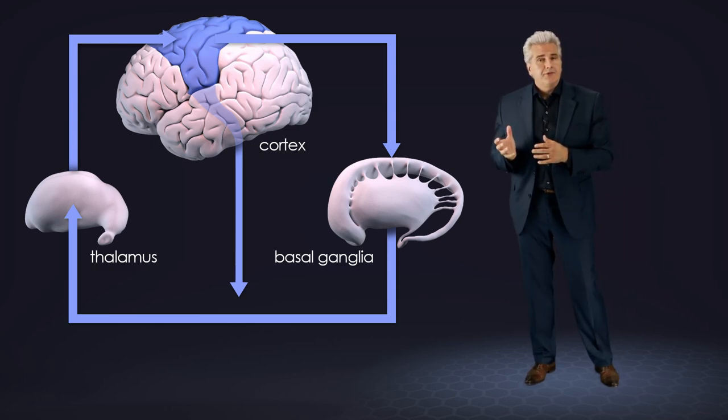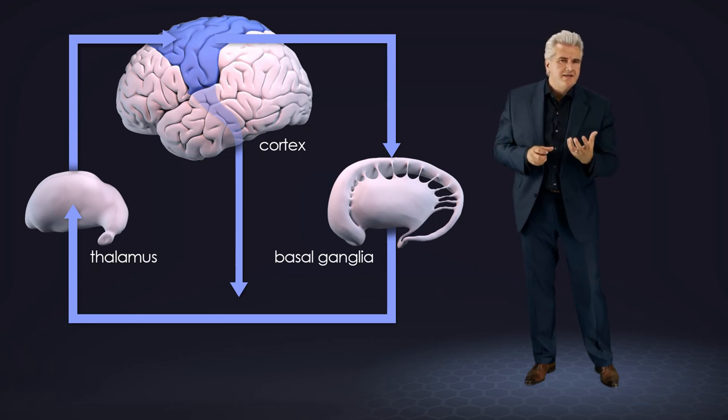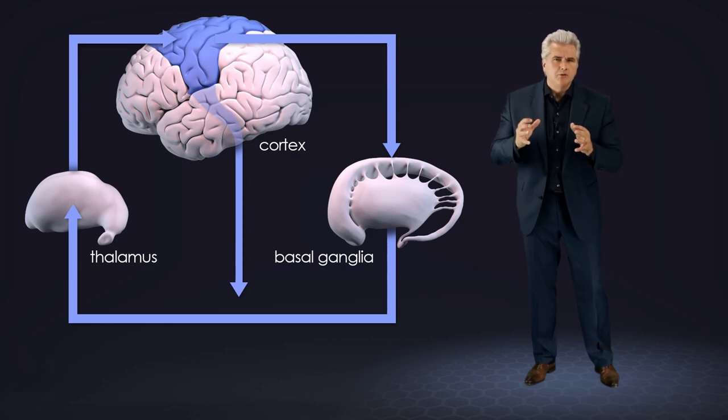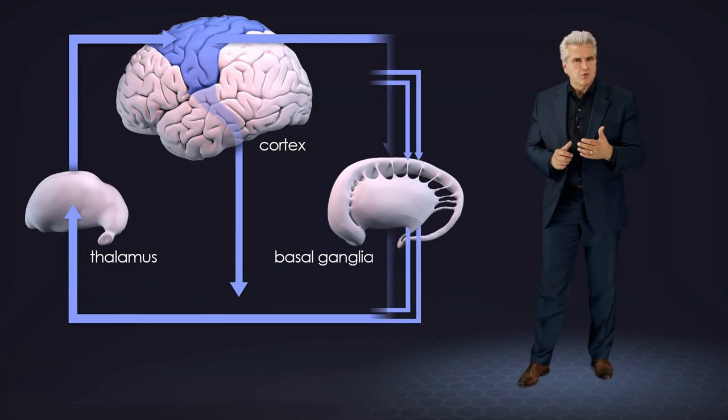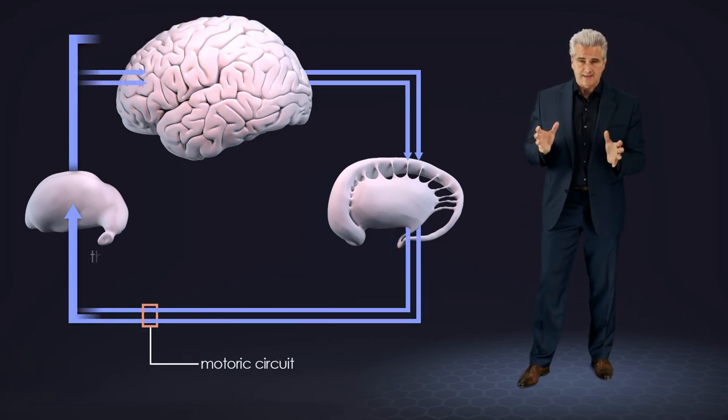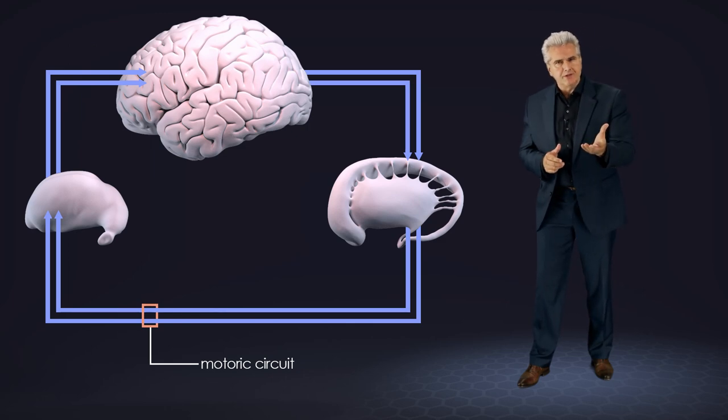This set of functions mediate the full range of goal-directed behaviors. That means the basal ganglia are also involved in processes that lead to movement.